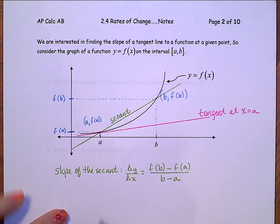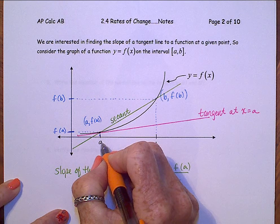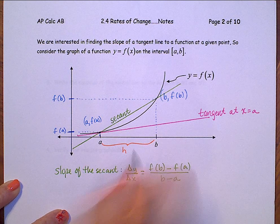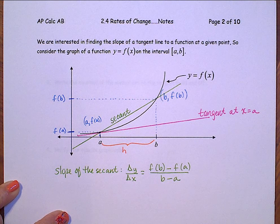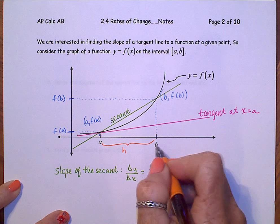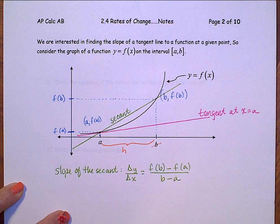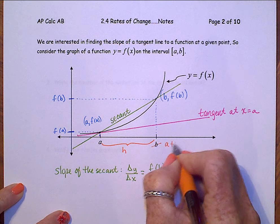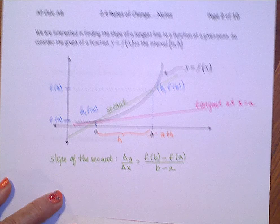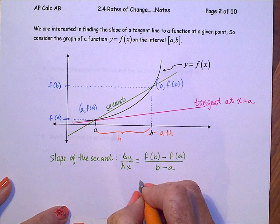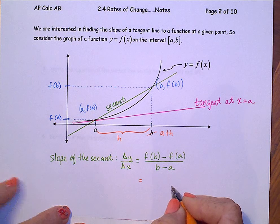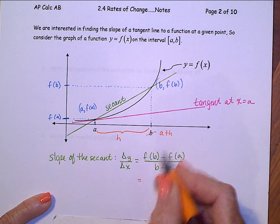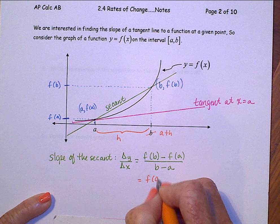Now, one more thing that I want to do is let's call this distance between a and b, let's give it some quantity, call it h, which means then that this b, I could call a plus h. So this is f of a plus h.